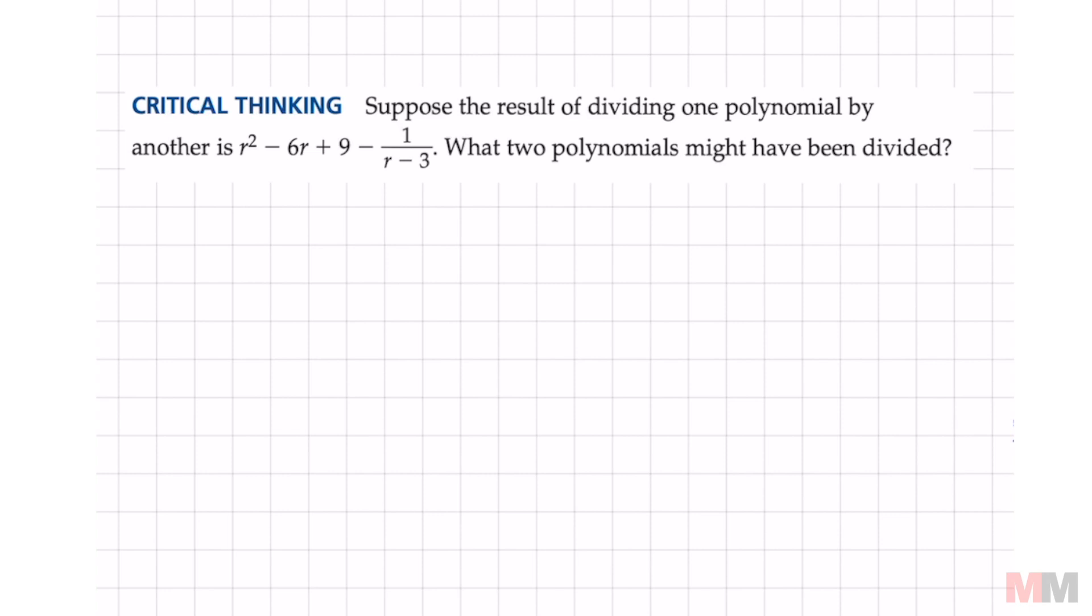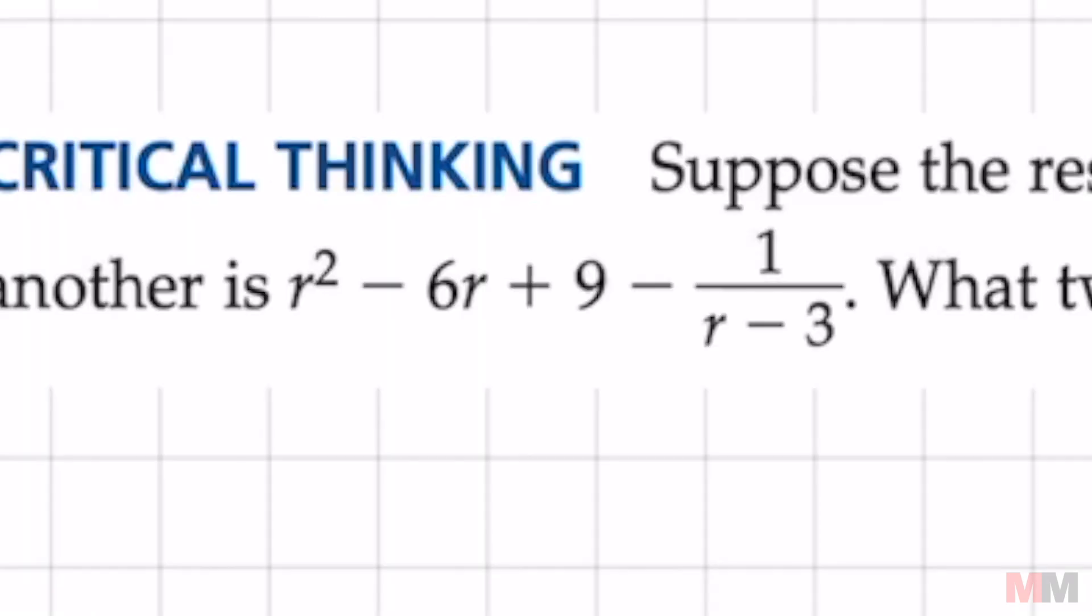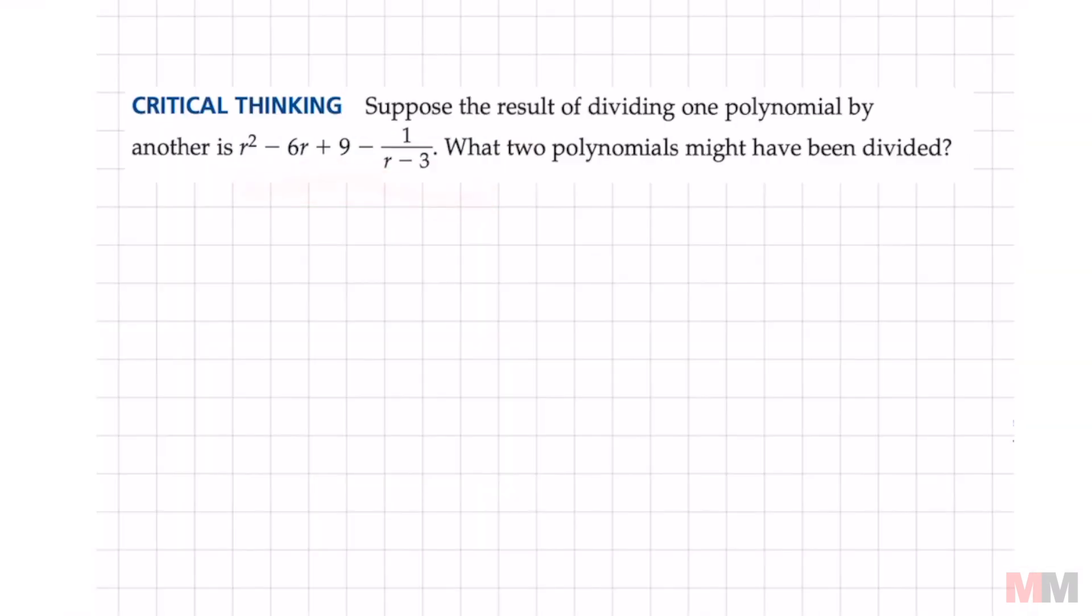Here's a really good polynomial question. Suppose the result of dividing one polynomial by another is this expression right here. What two polynomials might have been divided?